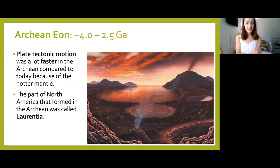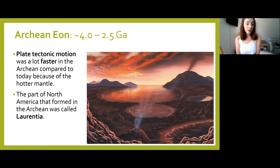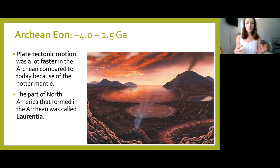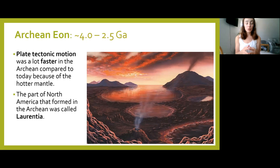Moving on to the Archean, this eon went from 4 billion years ago to 2.5 billion years ago. During this eon, plate tectonics was faster compared to today because Earth was much hotter, and this caused those continental crust pods to accrete to each other. As plates moved and eventually collided, these collisions caused accretion of these pods together — similar to how planetesimals accreted to form planets — forming larger continents. What formed in the Archean was a continent called Laurentia.